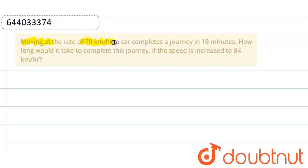Hello friends, question is: moving at a rate of 70 km per hour, a car completes a journey in 18 minutes. How long would it take to complete this journey if the speed is increased to 84 km per hour?